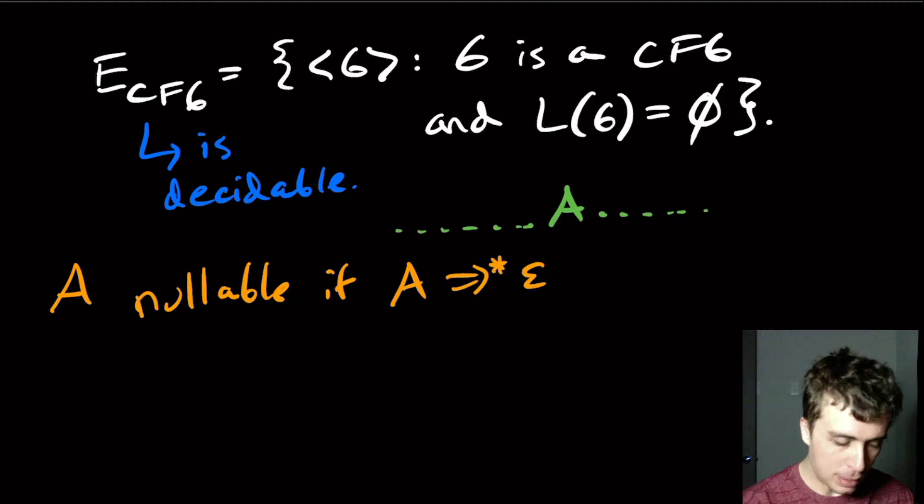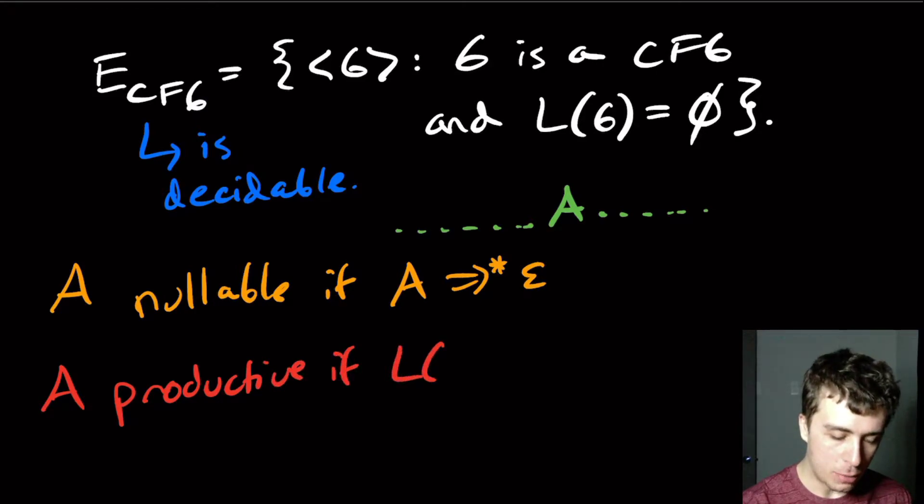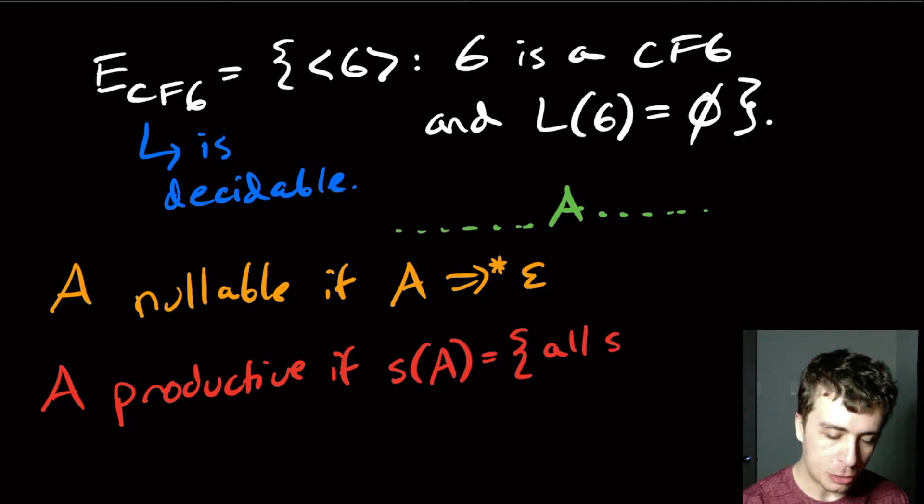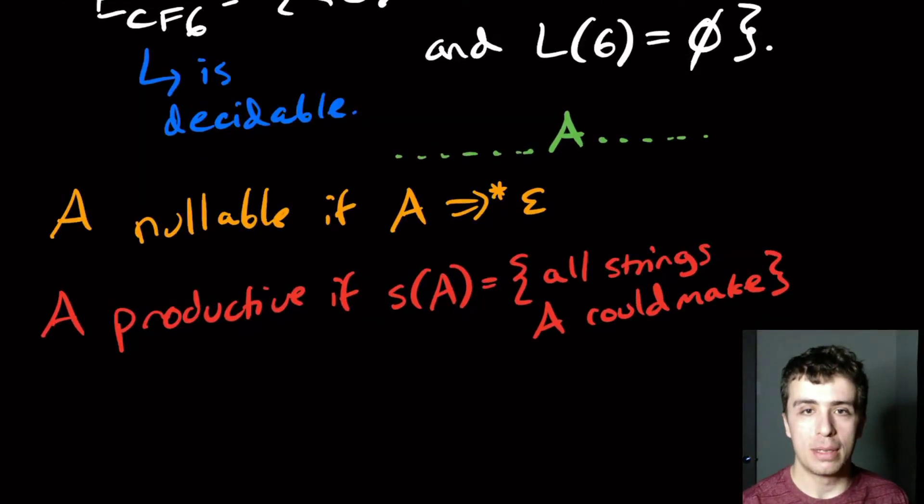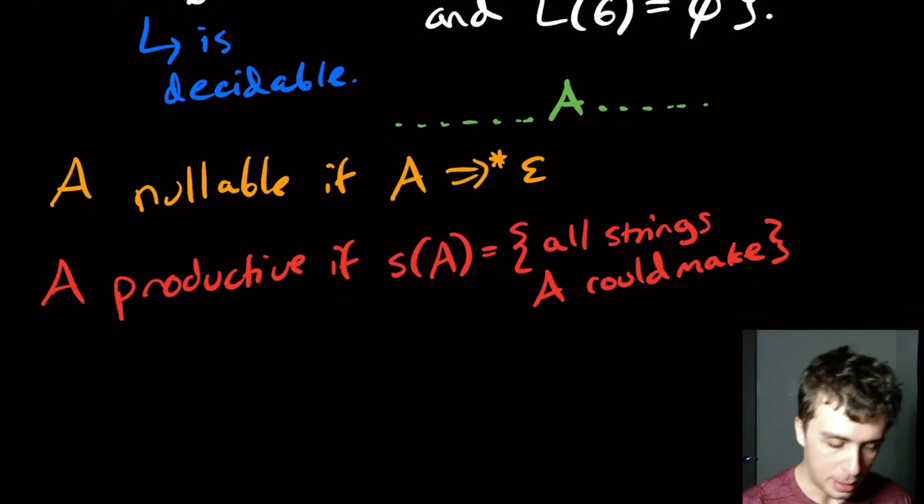and then ask the question about the start variable whether it can make any string at all. So let's call a variable a productive. If the language of this variable a here, or I should actually write it this way. So I'm going to call s of a a little function, which is all strings a could make.